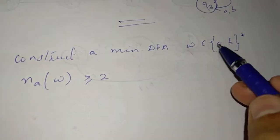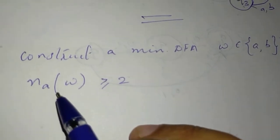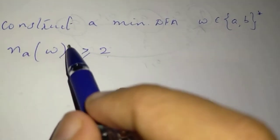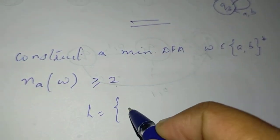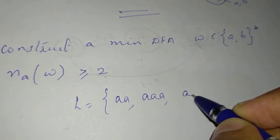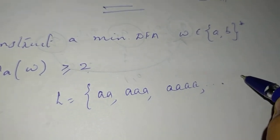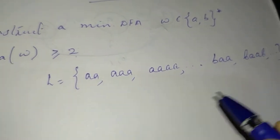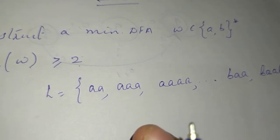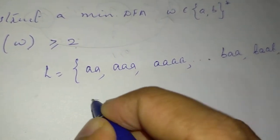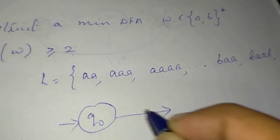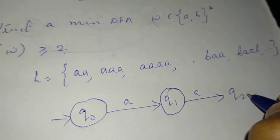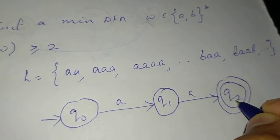Next question: string belongs to {a,b}*, and the number of a's is greater than or equal to 2. We have at least 2 a's. So what is our language? Strings with 2 or more a's. This is an infinite language. Let's construct the DFA: Q0 on A goes to next state Q1, and Q1 on A goes to next state Q2. A is acceptable, so Q2 becomes a final state.